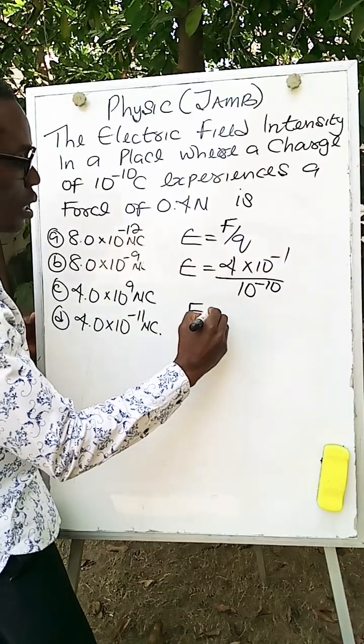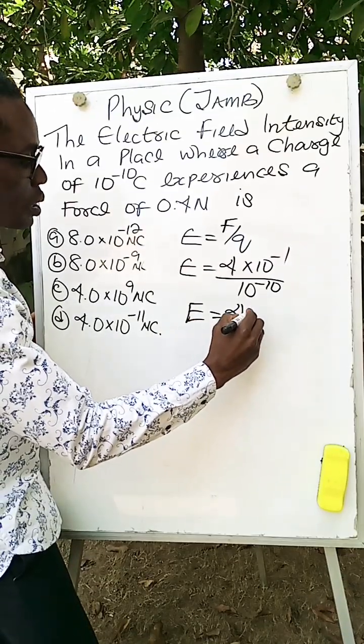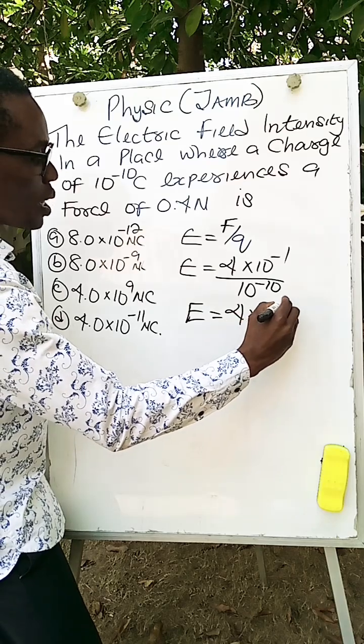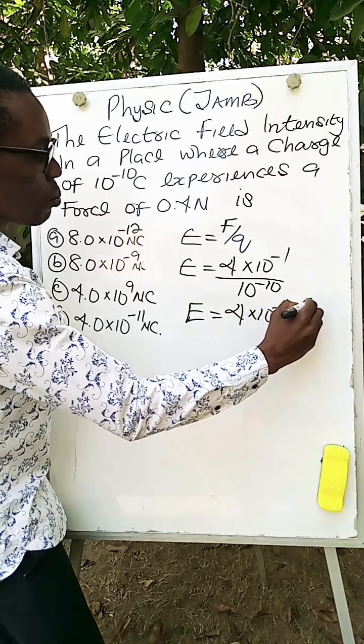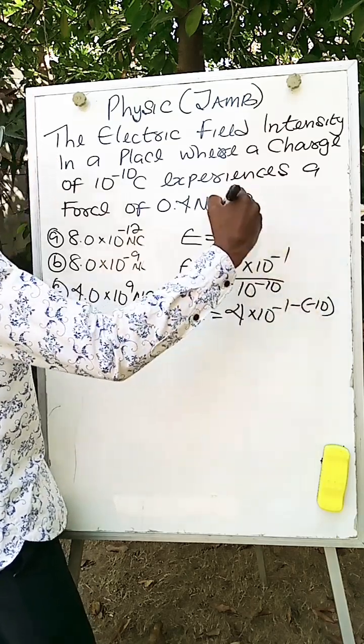we can see E equals 4 times 10 to the power of minus 1 minus minus 10. Because this 10 will come up.